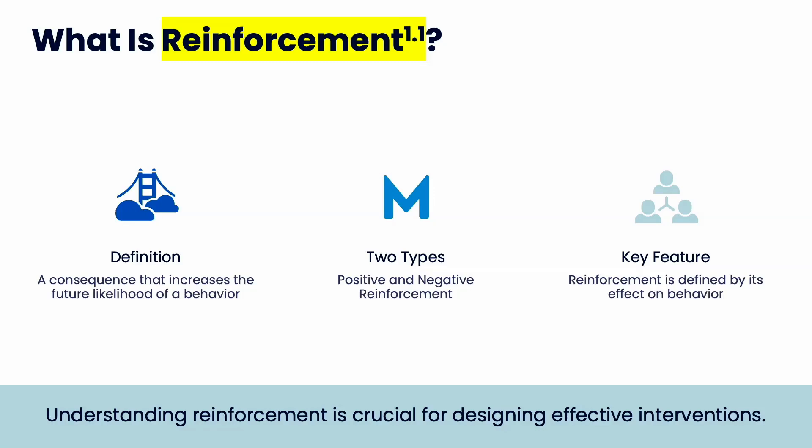There are two types. Positive reinforcement is where we add something after a behavior, and that addition increases the behavior in the future. Negative reinforcement starts with an aversive condition — the behavior happens — and then you remove that aversive condition, which increases that behavior in the future because it removes the aversive condition.